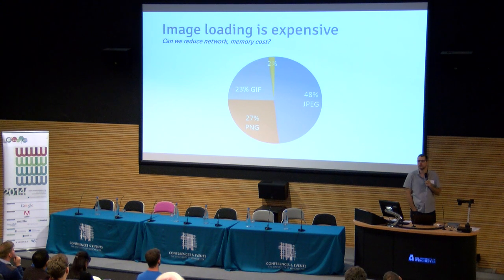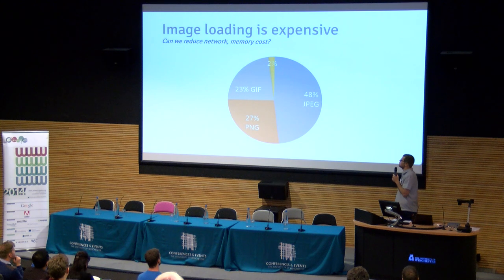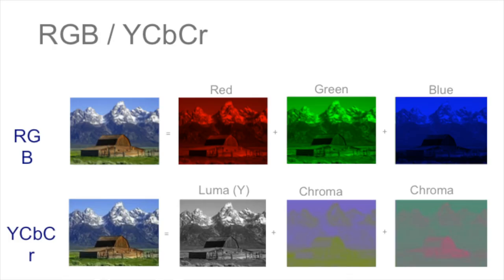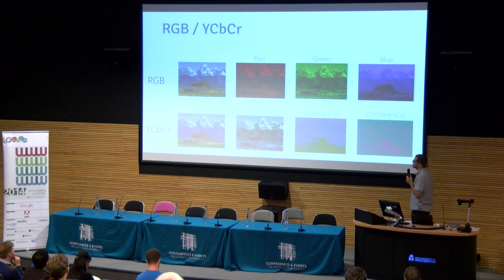Looking at all the images on the web, we wanted to see if we can reduce cost — both network cost, memory cost, and GPU bandwidth cost for loading images. About half of all images on the internet are JPEGs, and PNGs make up almost the other 50%. We looked into chroma subsampling. As you store images in GPU memory, you usually store them with red, green, and blue channels — 24 bits per pixel. Inside a JPEG, you don't do that — you have your Luma channel, your grayscale channel, and two chroma channels.